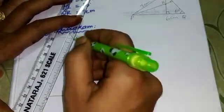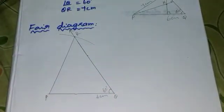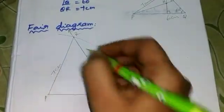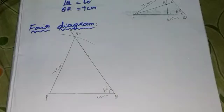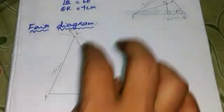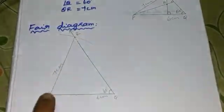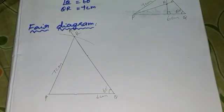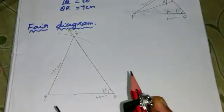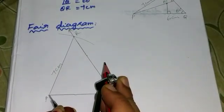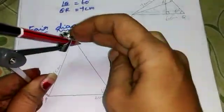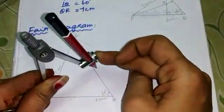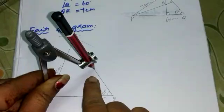Now the orthocenter is to be located. The orthocenter is the point of concurrency of altitudes. Select two vertices — R vertex and P vertex — and find the altitude from each. From point P, drop a perpendicular to the opposite side QR. The opposite side line is identified.